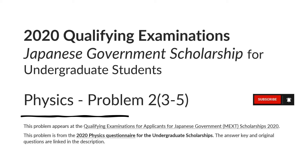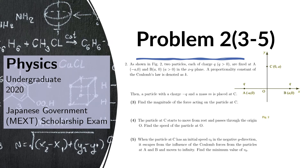Please hit subscribe. This problem appears at the qualifying examinations for applicants for Japanese government scholarships 2020. This problem is from the 2020 physics questionnaire for undergraduate scholarships. The answer key and original questions are linked in the description. This is the continuation of the second section of the physics questionnaire, so we will be answering questions 3 to 5.